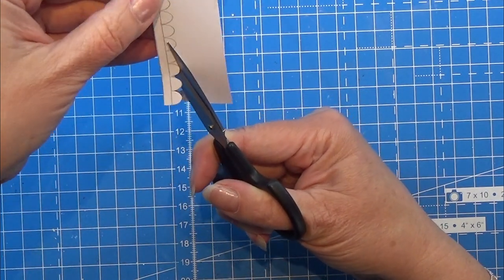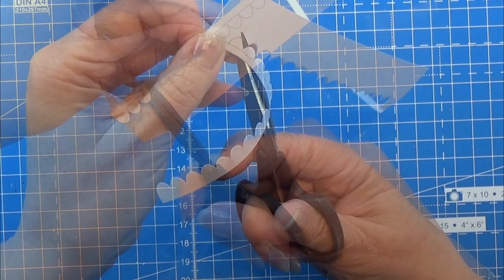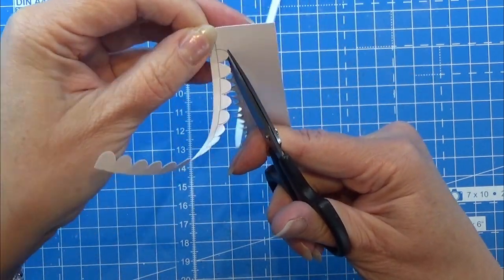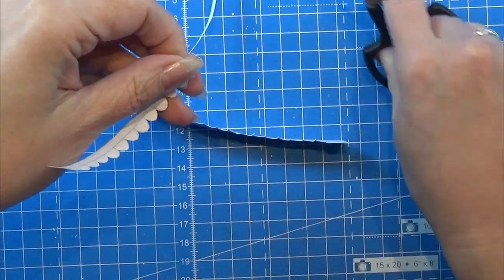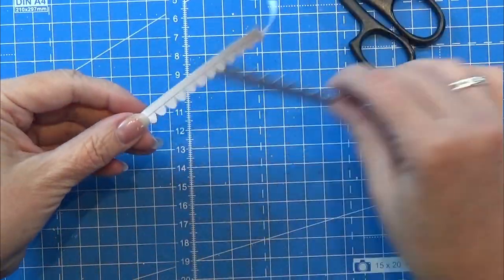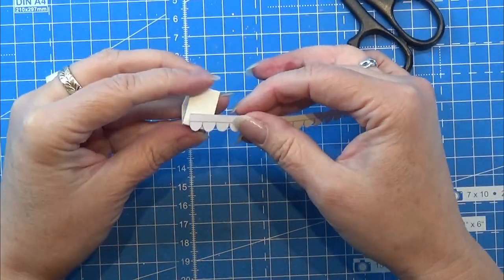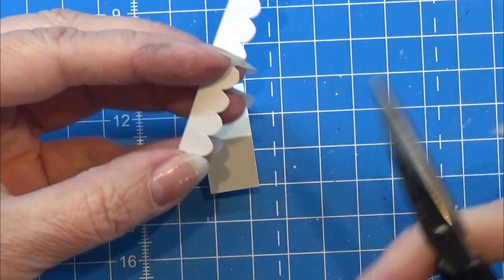Then I am going to cut out these shingles just like this, and I am going to make enough for this little birdhouse.